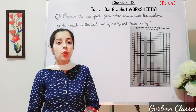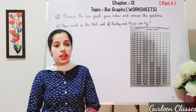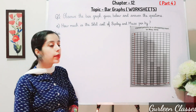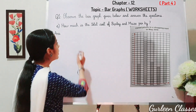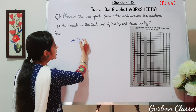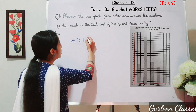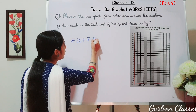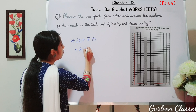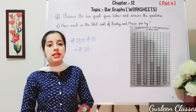Part E: how much is the total cost of barley and maize per kg? By seeing the bar graph, the cost of barley is rupees 20, plus the cost of maize is rupees 15. Adding them together gives rupees 35. So the total cost of barley and maize is rupees 35.